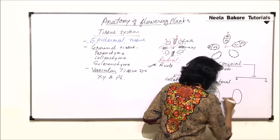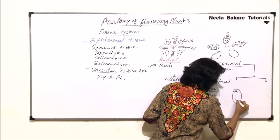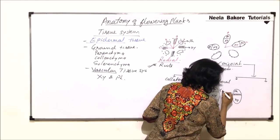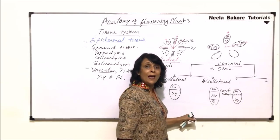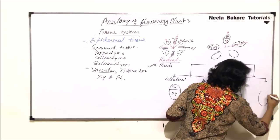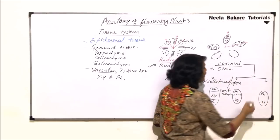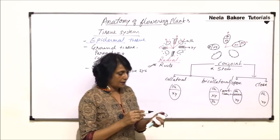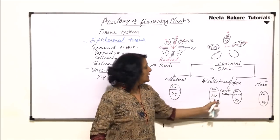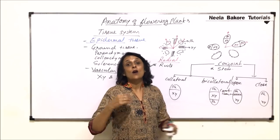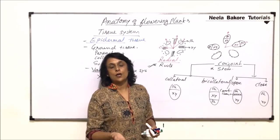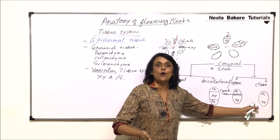If the vascular bundle is conjoint — outer side is phloem, inner side is xylem, on the same radius — and in between these two there is cambium, then such vascular bundles are termed as open vascular bundles. If between xylem and phloem there is no cambium, then the bundles are known as closed vascular bundles. Open vascular bundles are open for secondary growth, whereas closed bundles have no cambium, so no secondary growth can take place.